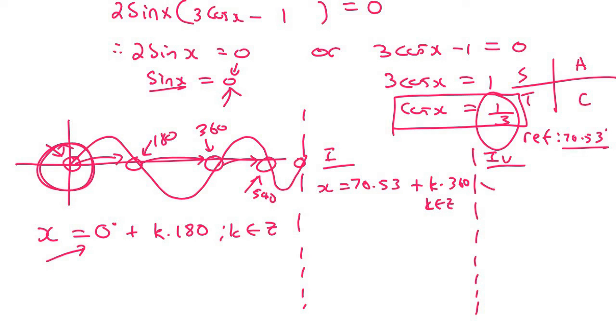In quadrant 4, you say x equals to 360 minus your reference angle of 70.53 plus k times 360, k as an element of Z. And then I can just simplify this one by saying 360 minus 70.53, and that's going to be 289.47 degrees. And so there's our final answers there. It's this one, this one, and this one.